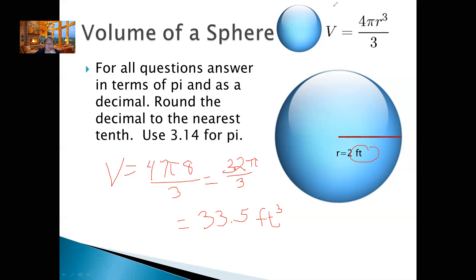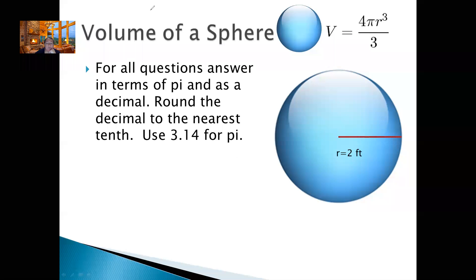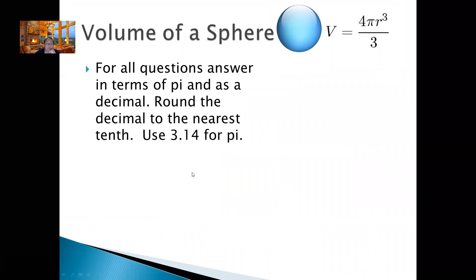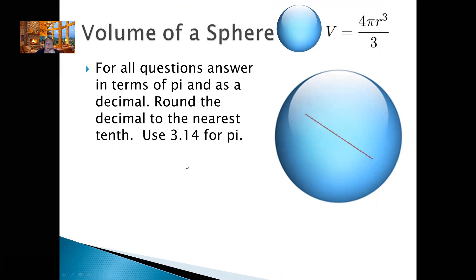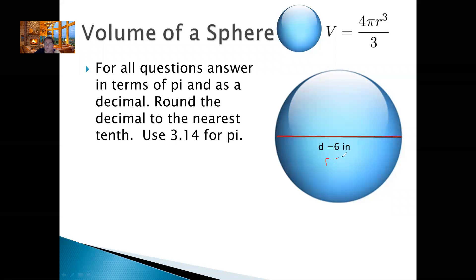The next one you're going to try to do on your own. This one they give you a diameter — hint hint hint. The diameter is 6. So go ahead, pause the video, and come back to check your work. Welcome back. The first thing you should notice is that this is D — we're looking for R, so we need to divide by 2 to find the radius. The radius is going to equal 3. So volume equals 4 pi r cubed over 3.